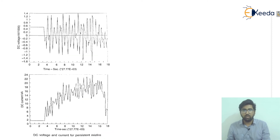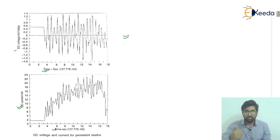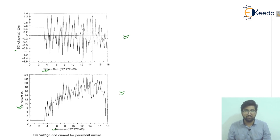Looking at the waveforms: the x-axis shows time in seconds, one graph shows DC voltage versus time, and the other shows DC current versus time. This graph represents persistent misfiring — showing DC voltage and DC current behavior during persistent misfire conditions. I hope you have understood all the concepts related to misfire.